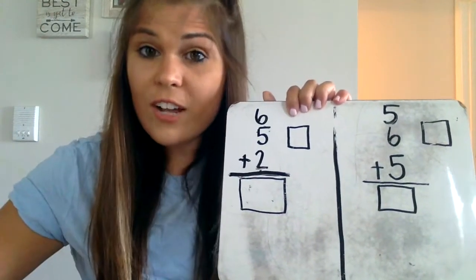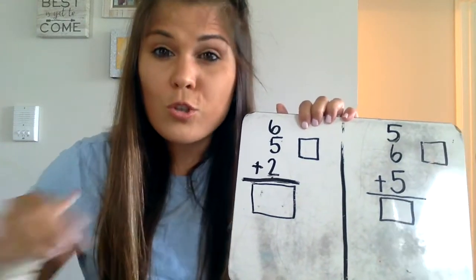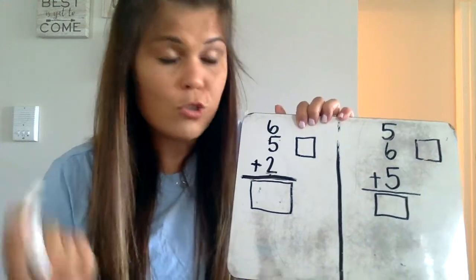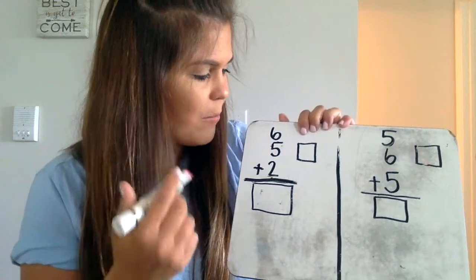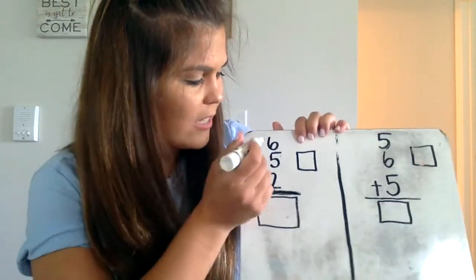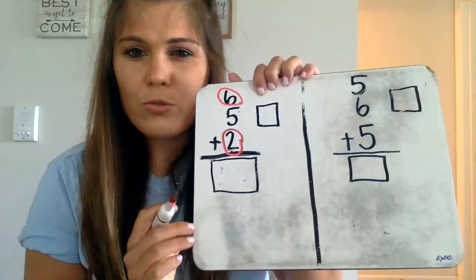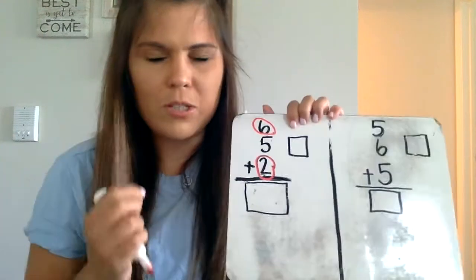In your activity today, they're going to ask you to circle two numbers to add together first. So, for example, I'm going to say, I think I want to add six plus two first. So I circle those two numbers, and I say, what's six plus two?